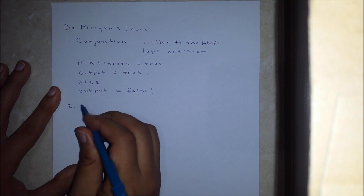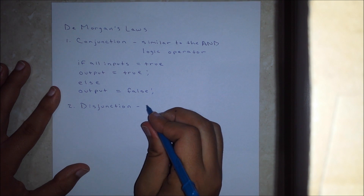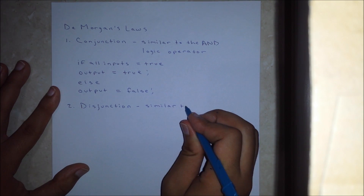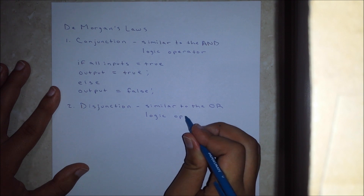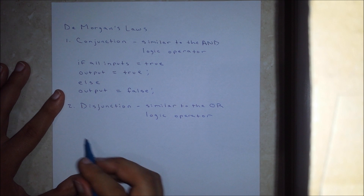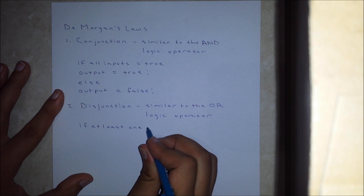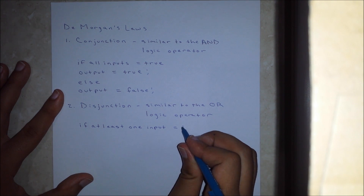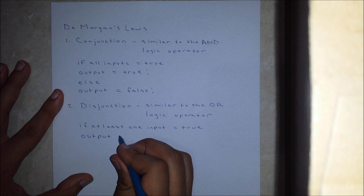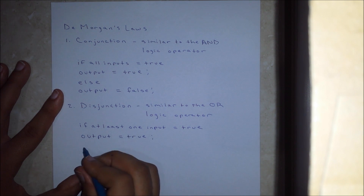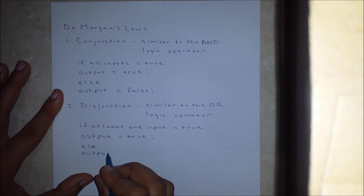The second term is known as the disjunction and it behaves similar to the OR gate or logic operator, in the sense that if at least one input equals true, the output of this operation shall be true. Else, the output will be false.